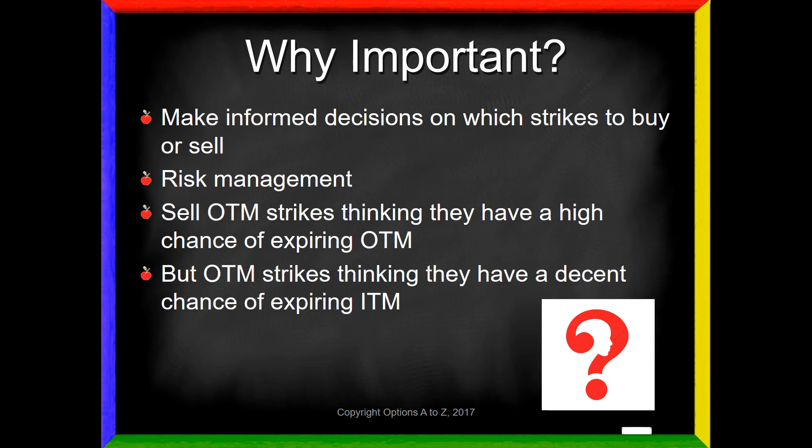So it's a form of risk management. All too often, you'll see that traders may sell out-of-the-money strikes thinking that they have a high chance of expiring worthless. But after looking at the numbers, they find out maybe it's not such a good idea. The option actually has a higher chance of going in the money than what they originally thought. Conversely, maybe you'll find traders that buy out-of-the-money strikes thinking that they have a decent chance of expiring in the money. But upon looking at the numbers, they find out it's not as good as they thought.